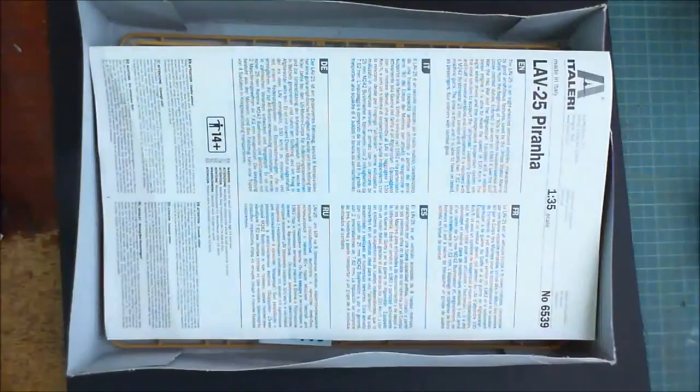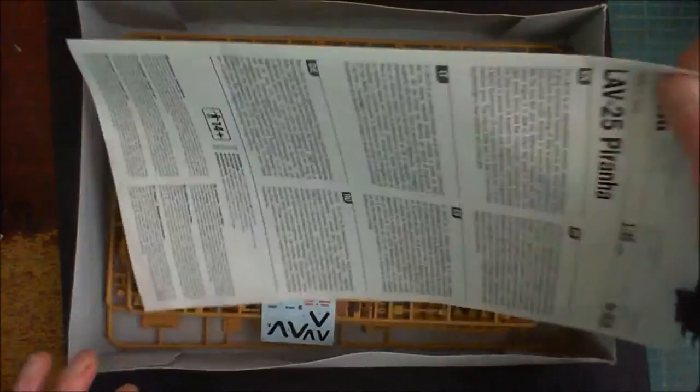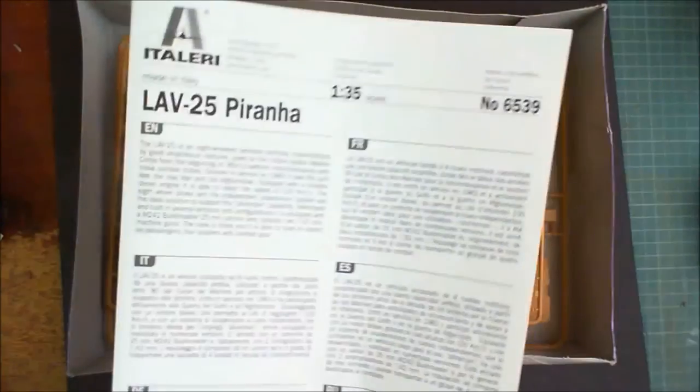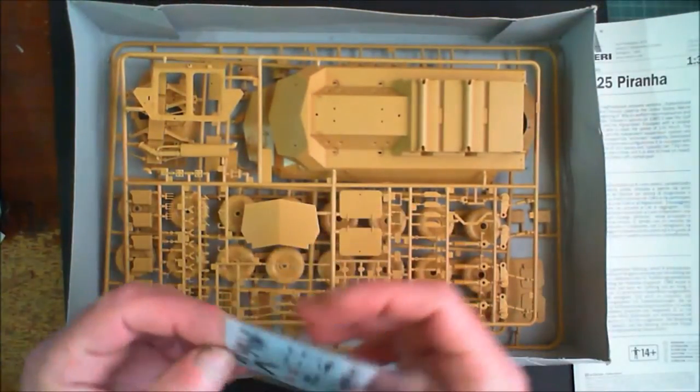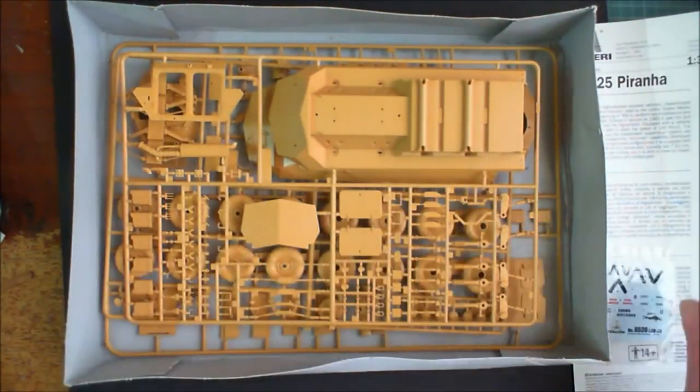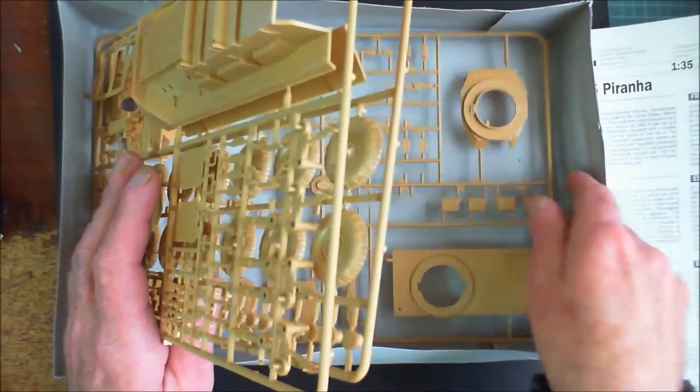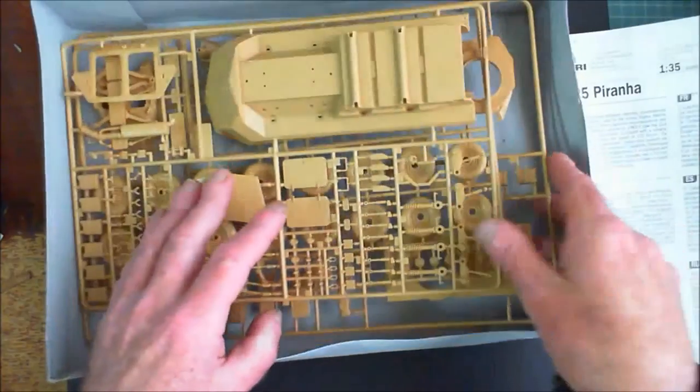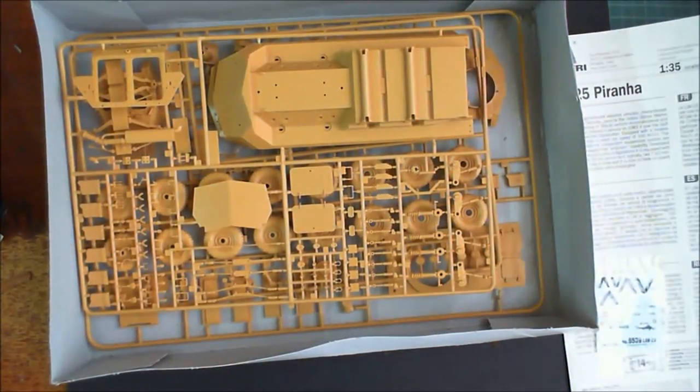Inside the box we get our construction sheet, we get a small decal sheet, and we get one, two, three sprues. So let's zoom down a bit and have a look at the sprues.